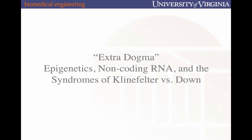In the last unit, we spent a fair amount of time breaking down the different parts of the central dogma — talking about transcription where DNA is read and transcribed into RNA, and then translation whereby mRNA is translated into the proteins they encode for. There are layers of regulation that inform how the central dogma occurs, dubbed here as 'extra dogma.' The two main areas we'll cover are epigenetics and non-coding RNA, discussed against the backdrop of Klinefelter and Down syndrome.